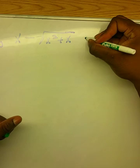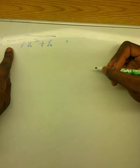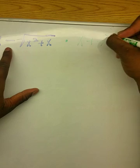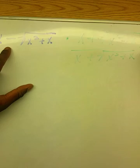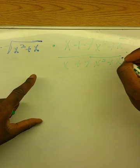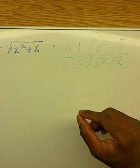Multiply it by its conjugate, which is just this with the middle sign switched. So it's going to be x plus the square root of x squared plus x over x plus the square root of x squared plus x. And the reason we can do this is because this is basically equivalent to multiplying by 1 because the numerator and denominator are the same.